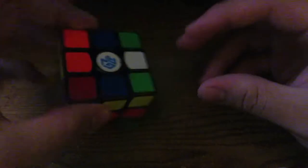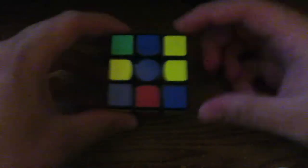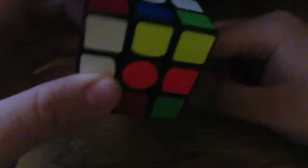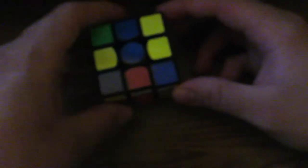Alright, so once you got your green cross, you're going to want to flip that bad boy so it's on the bottom side. And now you got this blue side on top. So, what we're going to do now is we're going to solve for the whole bottom two layers of this cube. They're all going to be solved.